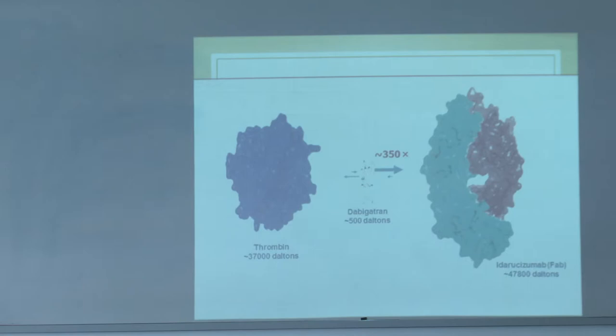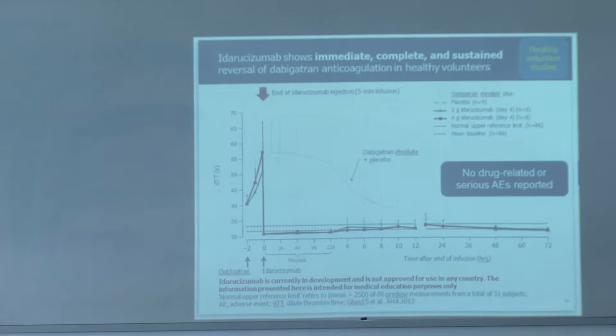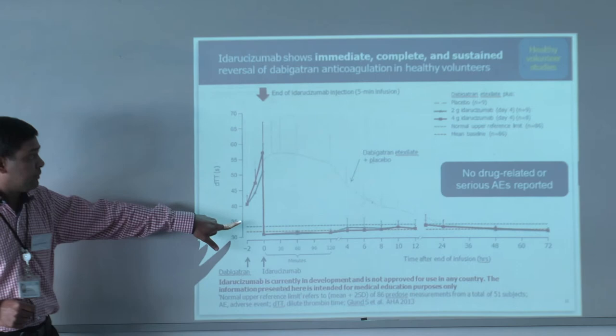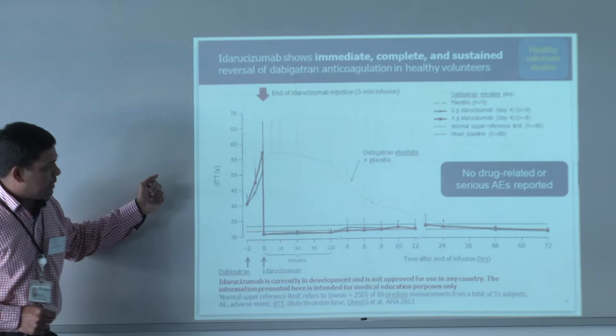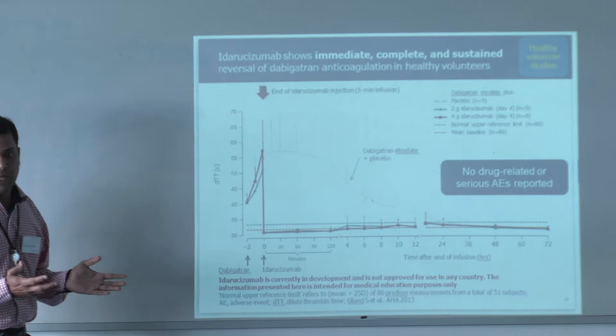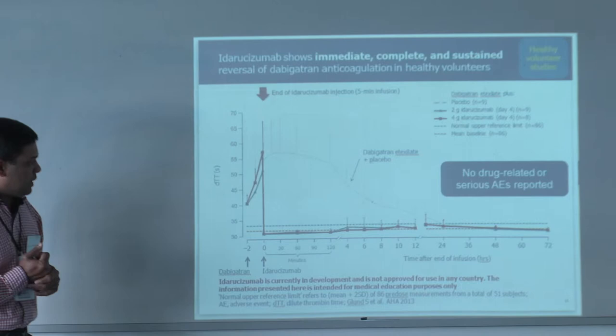This graph shows the effect of Praxbind in healthy volunteers. On the vertical axis is thrombin clotting time, which is prolonged. As soon as you give Praxbind, the TCT becomes normal — at various doses of 2 grams and 4 grams. Even 2 grams is effective. If you give placebo, the TCT will slowly come down to normal after 12 to 24 hours — so even if you do nothing, the anticoagulant effect will reverse eventually. But if you want rapid reversal, we can use Praxbind.